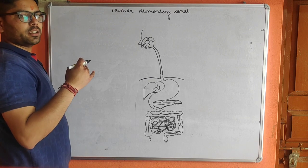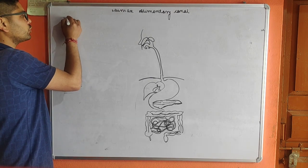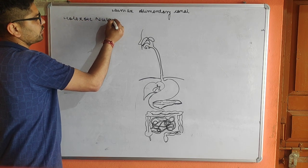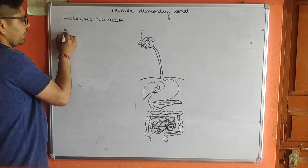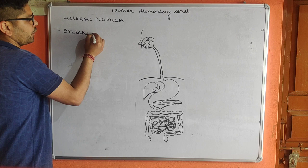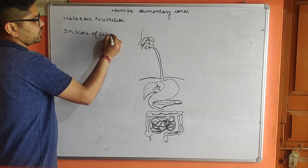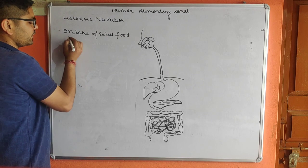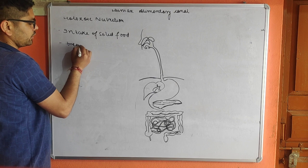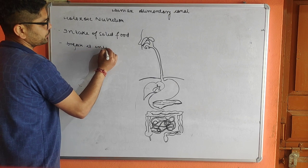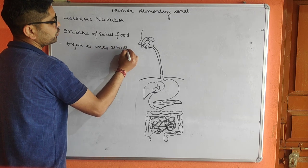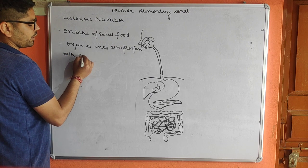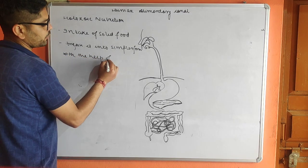First, you need to understand that in humans, the mode of nutrition is holozoic nutrition. Holozoic nutrition means taking in whole solid food into the body, and then breaking it down — that is, converting complex food into simpler forms with the help of chemicals called enzymes.